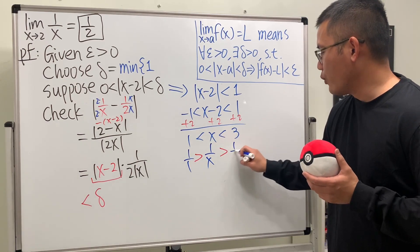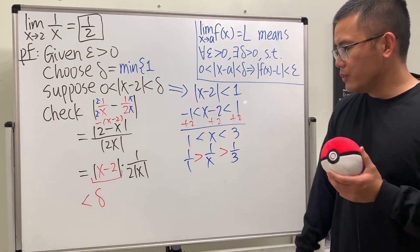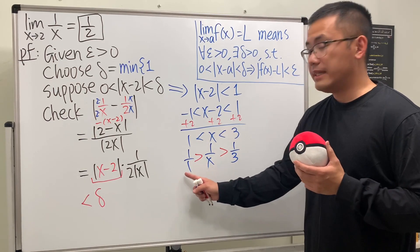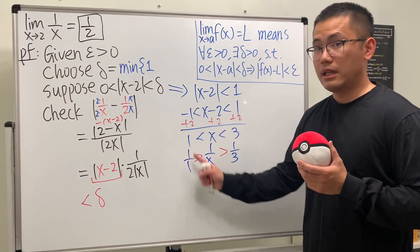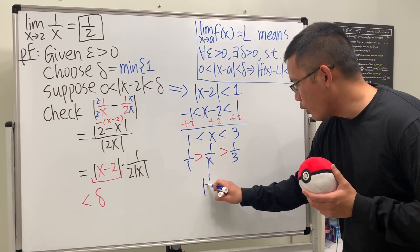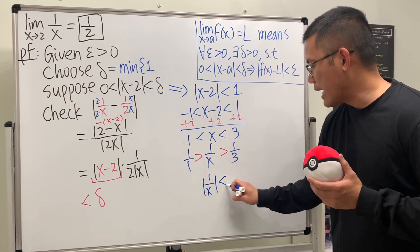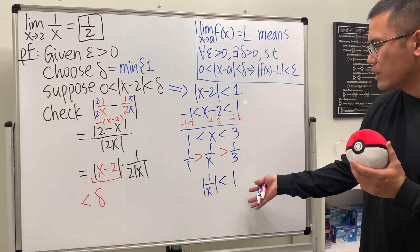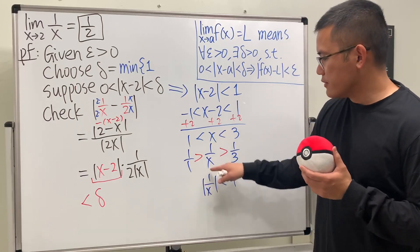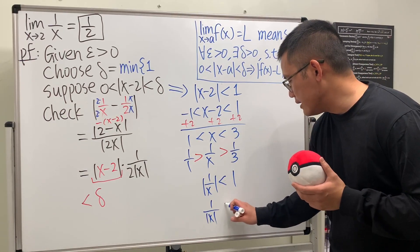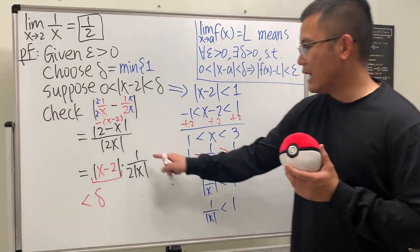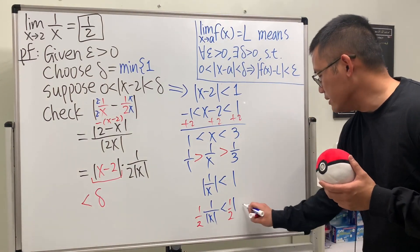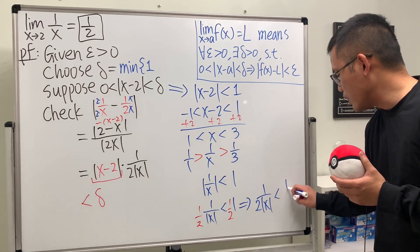After flipping, we see that 1 over x is less than 1, so absolute value of 1 over x is less than 1. We can rewrite that as 1 over absolute value of x less than 1, and multiplying both sides by 1 over 2 gives us 1 over (2 times absolute value of x) less than 1 over 2.